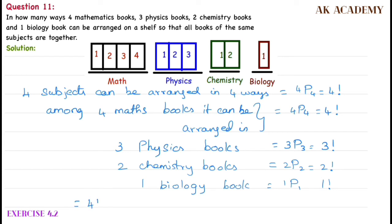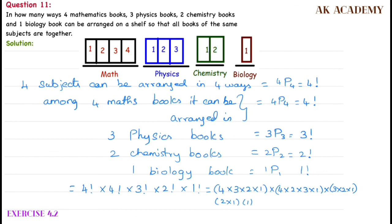So 4 factorial into 4 factorial, so 4 factorial into 3 factorial into 2 factorial into 1 factorial, which is equal to 4 into 3 into 2 into 1, into 4 into 3 into 2 into 1, into 3 into 2 into 1, into 2 into 1, into 1.